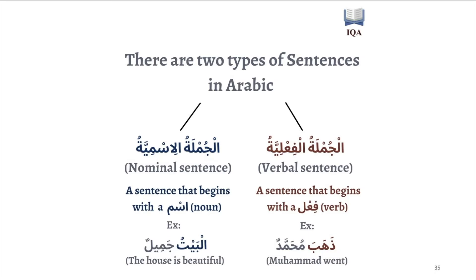On the other hand, jumlatun fa'aliya, a verbal sentence, is a sentence that begins with a fi'al — with a verb. For example, ذهب محمدٌ, which would be translated as 'Muhammad went'. So ذهب is a verb, and it is beginning the sentence, so this is a verbal sentence.